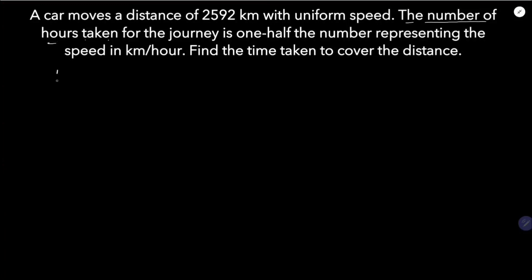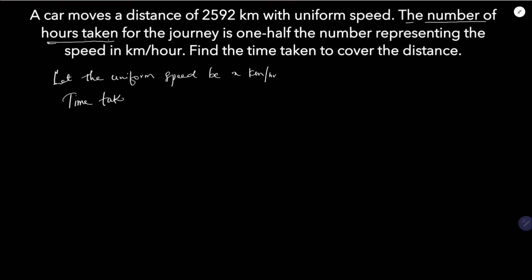Let the uniform speed be x km per hour. They told the number of hours taken for the journey is one half the number representing the speed. So since speed is x, the time taken to cover the distance will be x/2 hours.